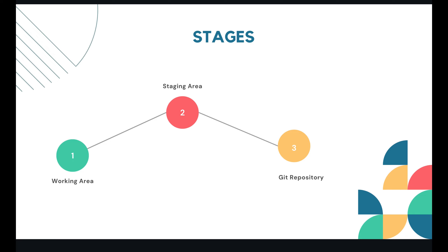Stage 2 is the staging area. When you run 'git add,' Git starts tracking your changes — the modified files move into the staging area and are stored inside the .git folder. Whenever you do changes in your working directory and perform the 'git add' operation, the status of those files is saved in the git repository staging area. Files added to the staging area are tracked by Git.